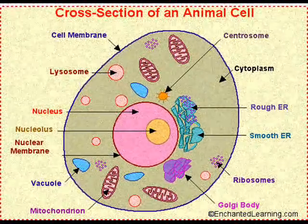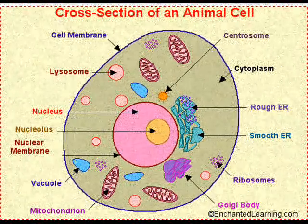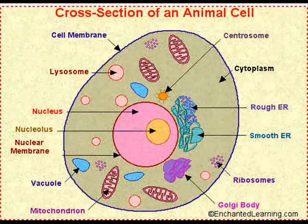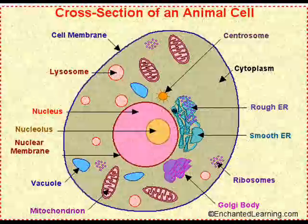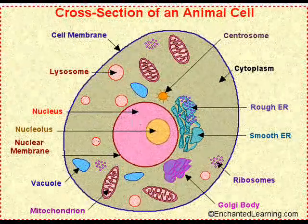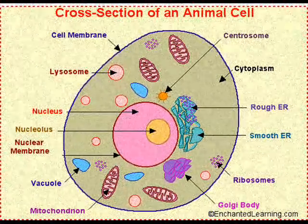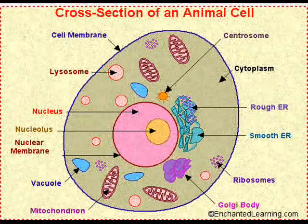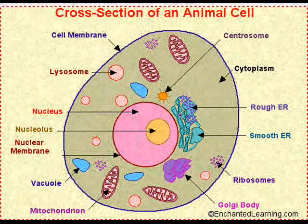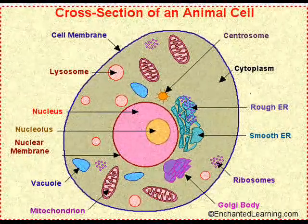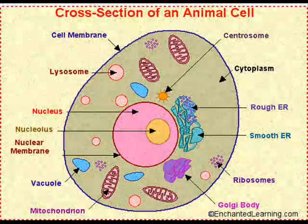Now, the first thing we're going to talk about is the cell membrane, which is sort of like the hotel guard. It lets the stuff that should be let in, like people with a reservation, come inside, and keeps the bad stuff out. It encircles the entire cell and always protects it valiantly.